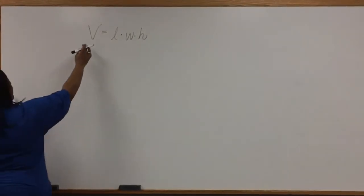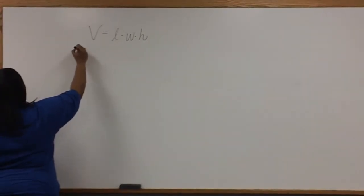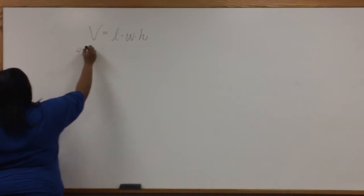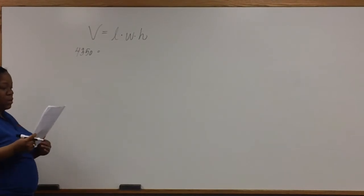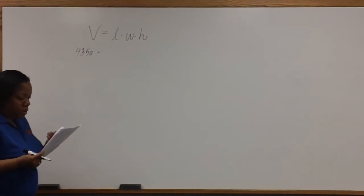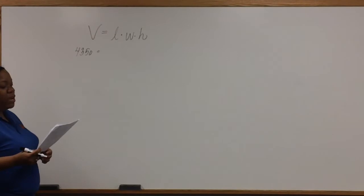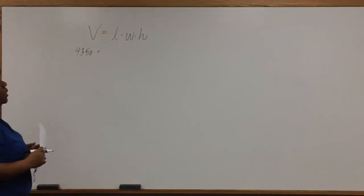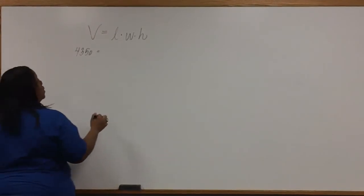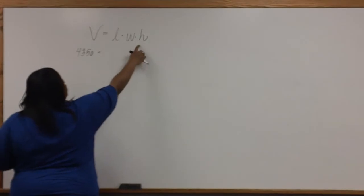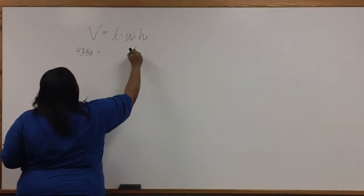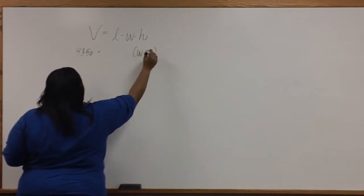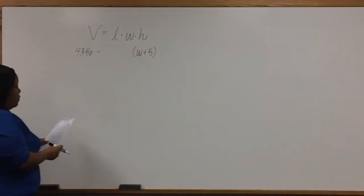We're given the value for the volume, which is 4350, and we're told that the aquarium is five inches higher than it is wide. So we're given an expression for the height. We know that the height is five inches higher than it is wide, so that's W plus five.